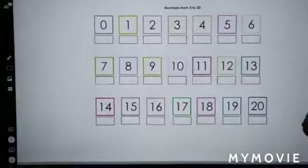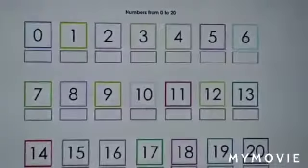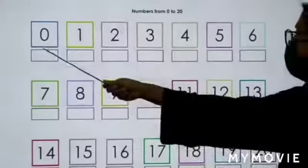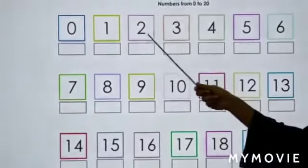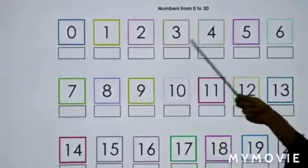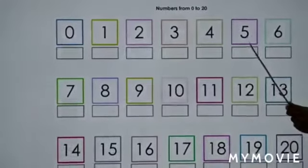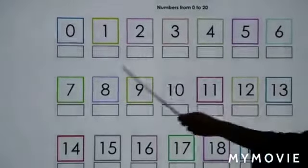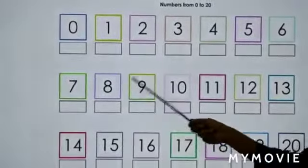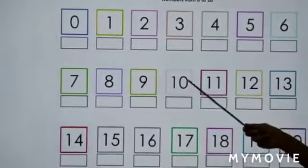Now let's do some counting from zero to twenty. Zero, one, two, three, four, five, six, seven, eight, nine, ten,